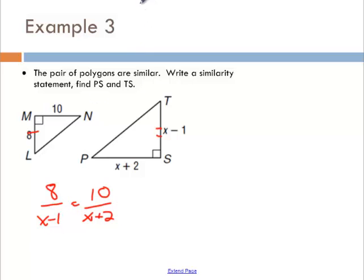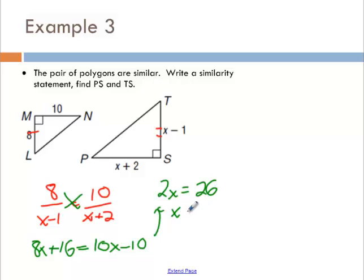Cross multiply and solve just like we did before. 8 times X plus 2. Now, I'm going to skip that step that I was talking about earlier. And notice how I distribute when I solve. When I go to solve, let's bring this up here. Got 2X equals 26. So X is 13.